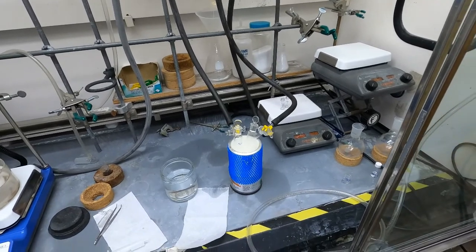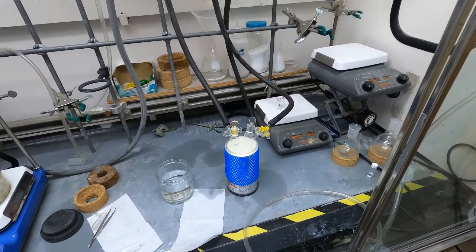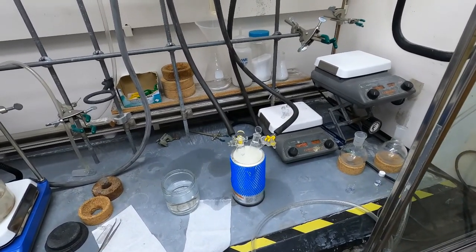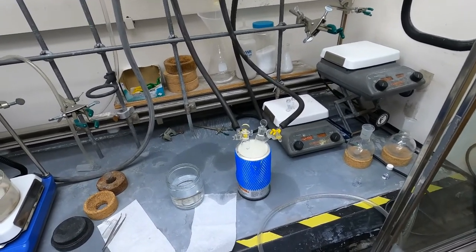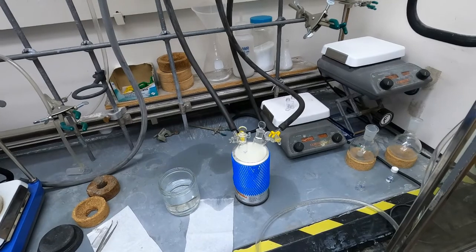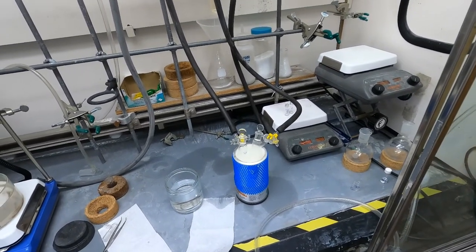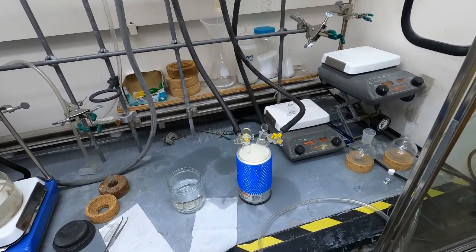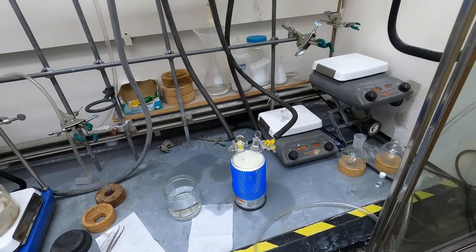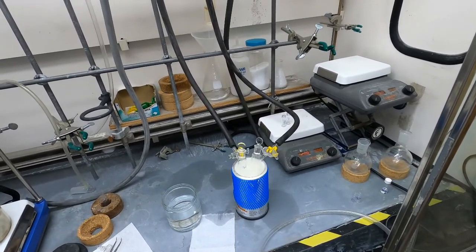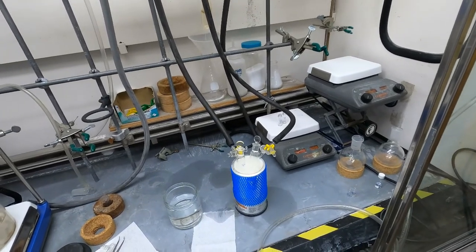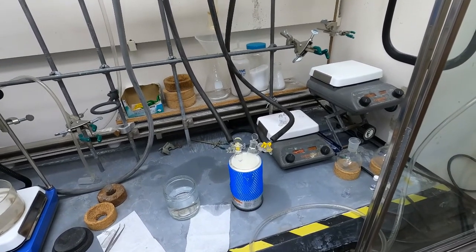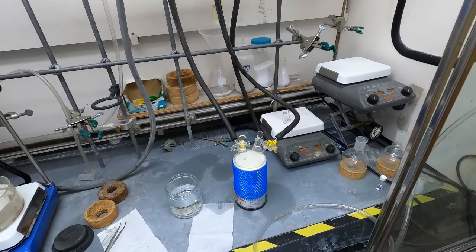After we've exposed the tubes to vacuum for about five minutes, we're going to close the stopcocks, take the tubes out of the liquid nitrogen, and then thaw them in a water bath. By thawing them, all the gas that was dissolved in the solvent will bubble out back into the evacuated head space. We'll repeat that process a few more times. This is a good way to get all of the gas both in the head space and that's dissolved in your reaction or your solvent out.